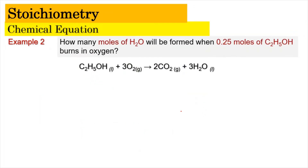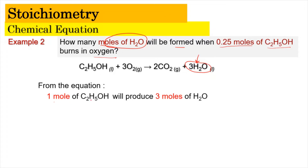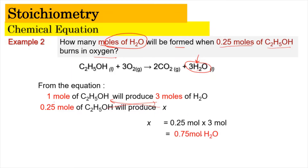Now example number two: how many moles of H2O will be formed when 0.25 mole of C2H5OH burns in oxygen? From the equation, one mole of C2H5OH (ethanol) produces three moles of water. If we have 0.25 mole of C2H5OH, then we produce x moles of H2O. By cross multiplication, x equals 0.25 multiplied by three, giving 0.75 moles of H2O. It's a ratio of one to three.